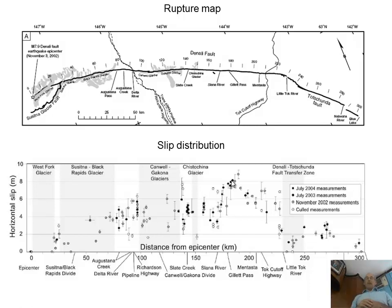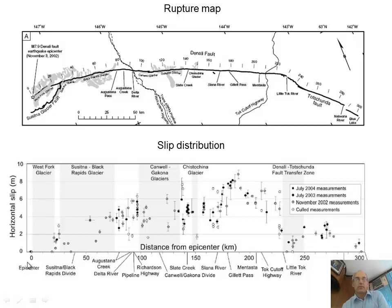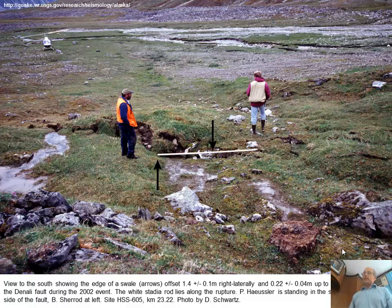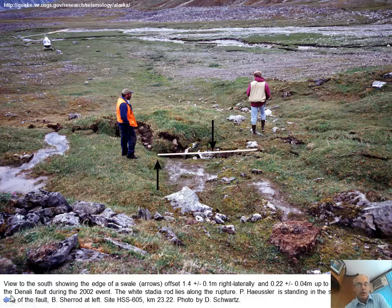I'll show you many pictures now — they have great photographic documentation of sites along the rupture. Positions are in kilometers from the west, zero going this way. Here is an example of an offset. They had helicopter support and went to many places. The fault is here, and what they mapped was a small drainage offset — 1.5 meters right-lateral, or 1.4 ± 0.1 meters plus 22 centimeters up to the south across the Denali fault. This is at kilometer 23.